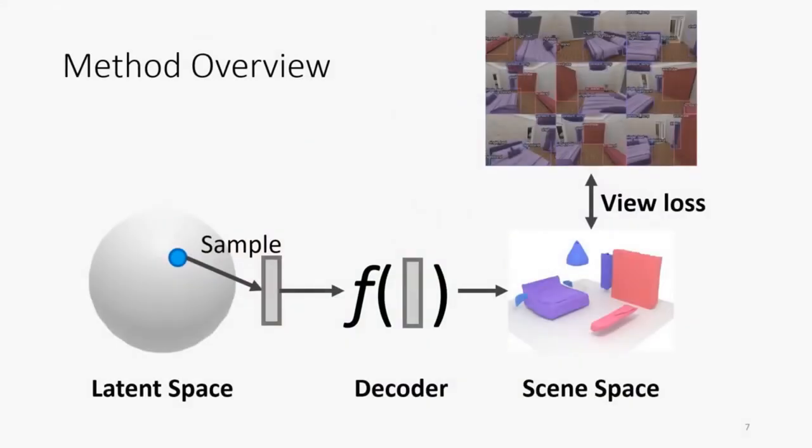Here is an overview of our method. Our 3D scene prior is learned by optimizing for a mapping from a latent space to a manifold of 3D scenes. Each random vector sampled from the latent space is decoded into a sequence of objects. We train this generation process guided by our view loss with differentiable rendering.